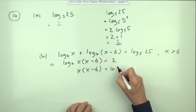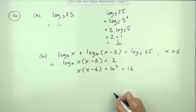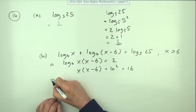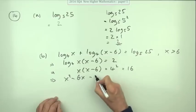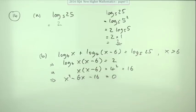So expanding that out gives you x squared minus 6x minus 16 equals 0. A quadratic here which, being paper one, should hopefully factorize.